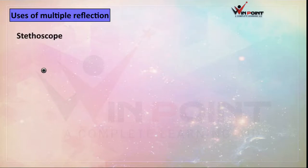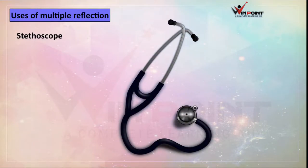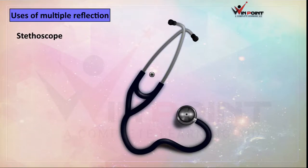The next one is the stethoscope. This device is used to measure the heartbeat. When sound gets inside this stethoscope, the sound undergoes continuous reflection and it reaches the ear.